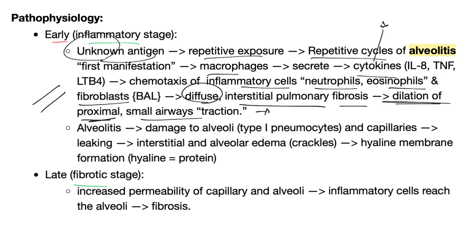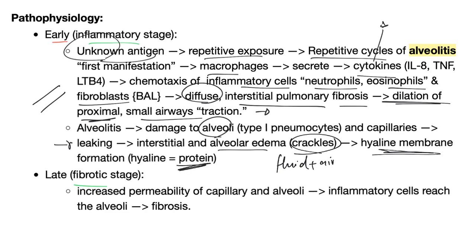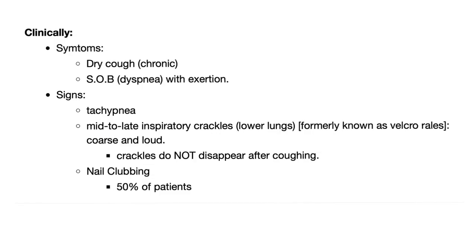Alveolitis causes damage to the alveoli, type 1 pneumocytes, and the capillaries, leading to leaking. Leaking causes fluid inside the alveoli. When you have fluid and air at the same time, you'll hear crackles, and this can lead to hyaline membrane formation — hyaline meaning protein, staining pink. Later you have fibrosis from increased capillary permeability and ongoing inflammation.